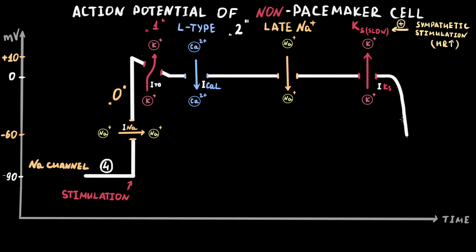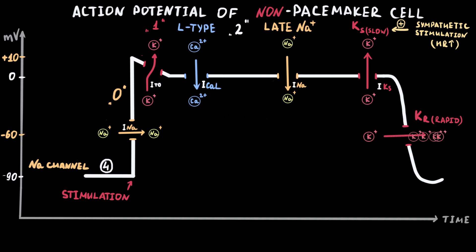The next phase is phase 3, or repolarization, which is provided by different outward potassium currents. The first current responsible for termination of the action potential plateau is rapid potassium current. The rapid potassium channel activates relatively rapidly and maintains significant outward current during phase 3. The rapid potassium channel pore is mostly formed by the alpha subunit KV11.1 protein, encoded by the KCNH2 gene. Inherited loss-of-function mutations in KCNH2 are associated with prolongation of action potential repolarization and congenital long QT syndrome type 2.